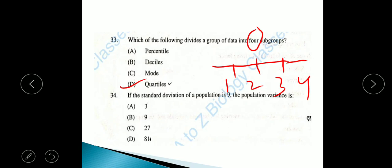Question 34: If the standard deviation of a population is 9, the population variance is... There is a formula for variance: V equal to standard deviation square. Here standard deviation is 9, so 9 square equals 81. Answer is option D.